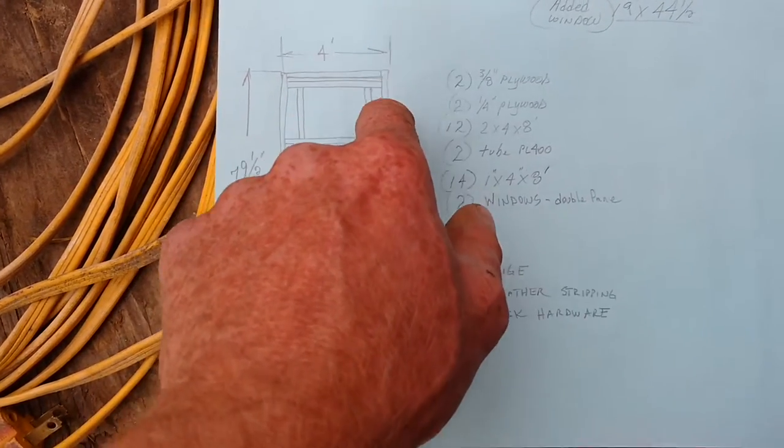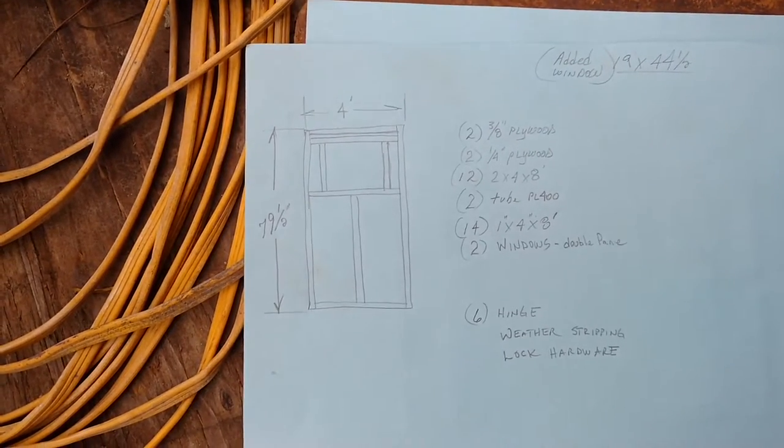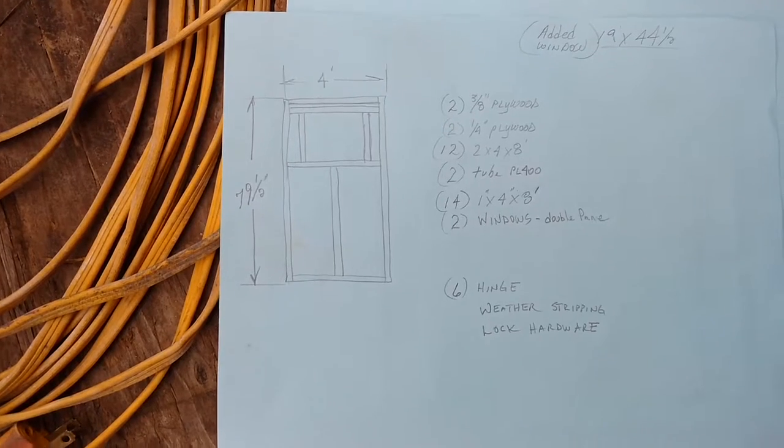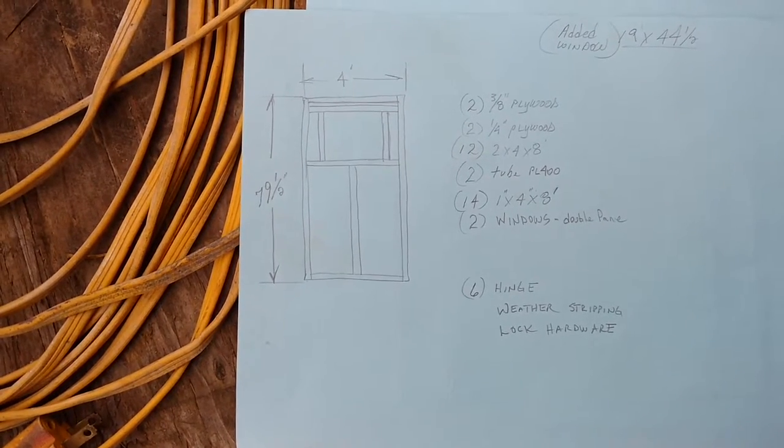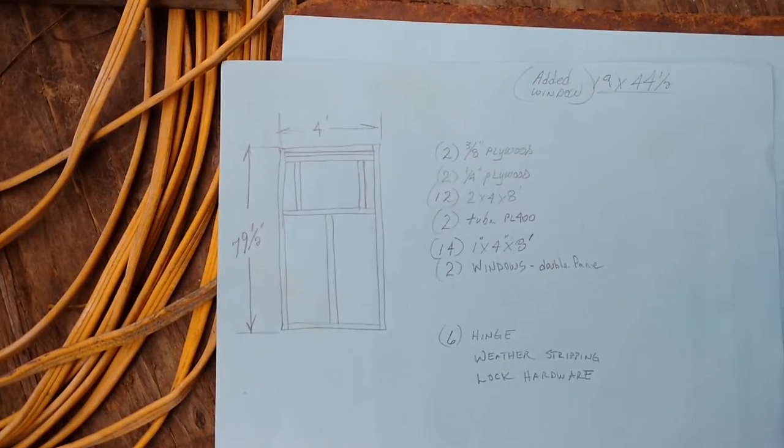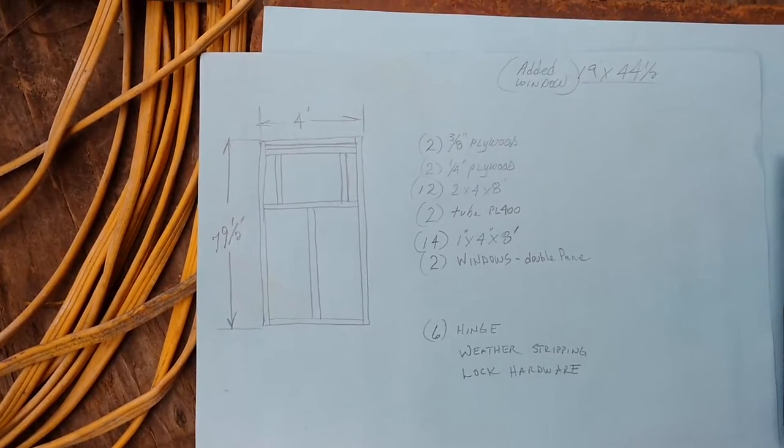I'm just going to take it and run the 2x4s through my planer or my joiner and just clean up the rounded edges so that I've got a nice sharp edge all the way around the door when it butts up to the plywood. Just strictly to make it look sharper, that's about it.